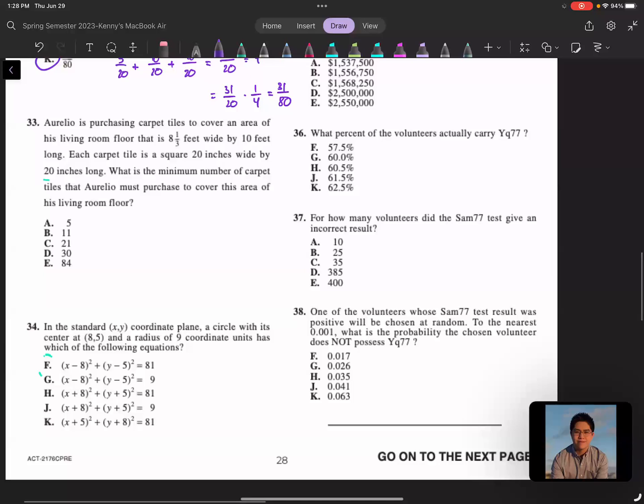Question 33: Aurelio is purchasing carpet tiles to cover an area of his living room that is 8 and 1/3 feet wide by 10 feet long. Anytime I see numbers, I say okay, that's probably important. Each carpet tile is 20 square inches by 20 inches long. What is the minimum number of carpet tiles that Aurelio must purchase to cover this area of the living room floor?